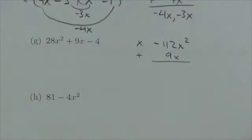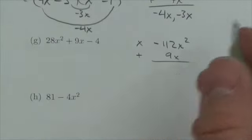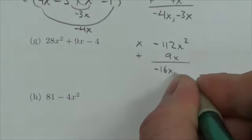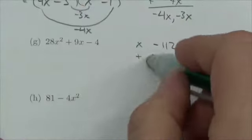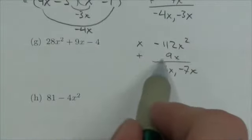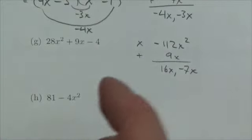Now there aren't that many to choose from, so it shouldn't take you too long to realize that this has got to be—sorry, I've got that backwards—positive 16x and negative 7x. That is how I'm going to get that sum of positive 9.